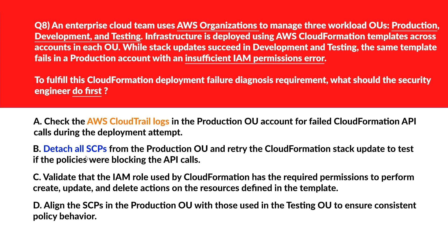Option B says: detach all SCPs from the production OU and retry the CloudFormation stack update to test if the policies were blocking the API calls. Removing all SCPs weakens security controls and bypasses governance without confirming the root cause issue. Let's discard this.